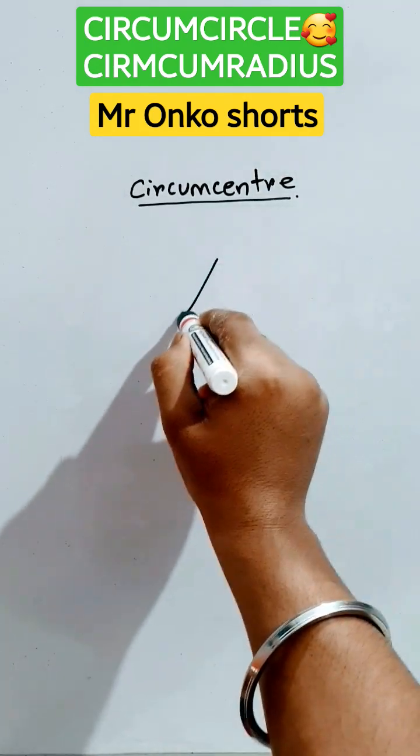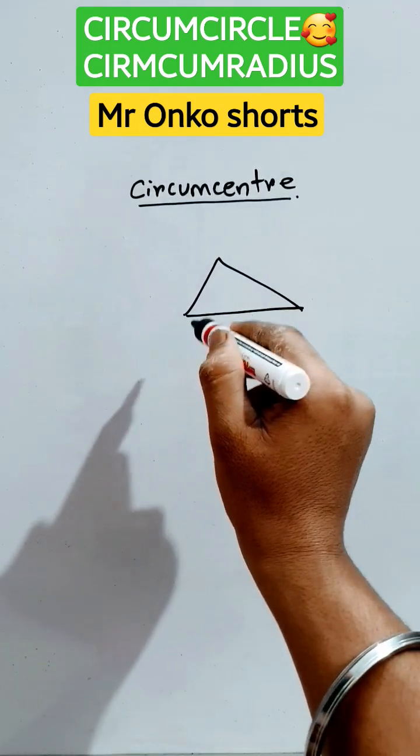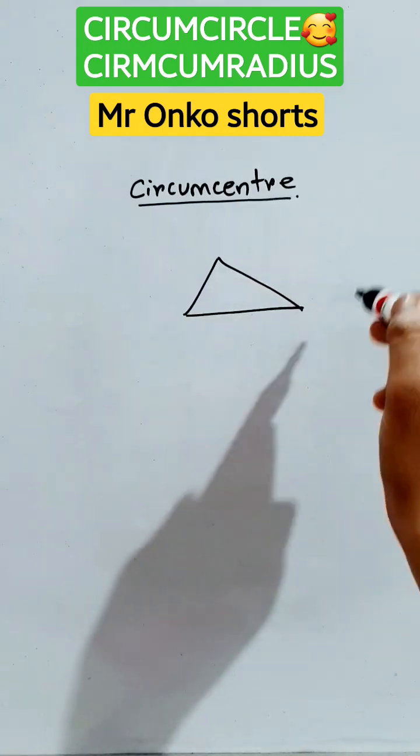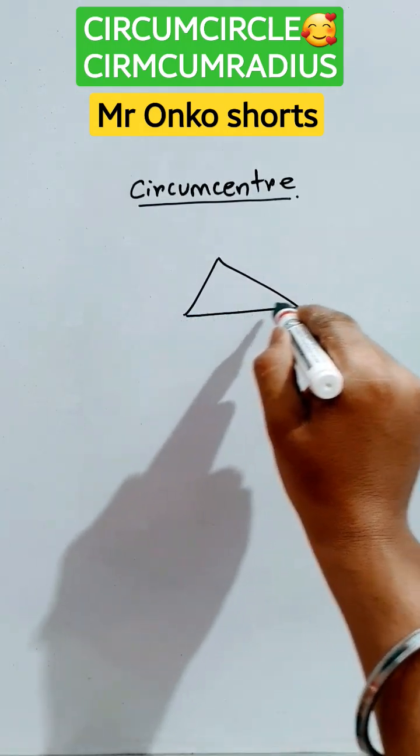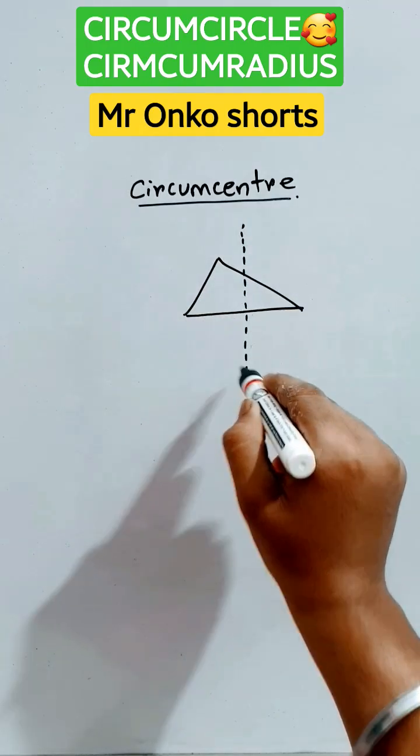First of all, let's draw a triangle. Now, draw the perpendicular bisector of each of the sides. This is the line. We have to draw the perpendicular bisector. So, this will be the perpendicular bisector.